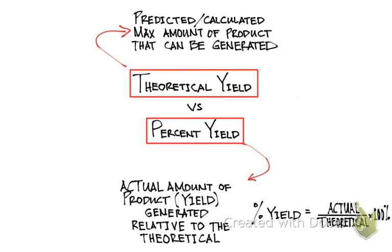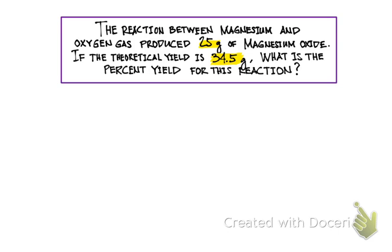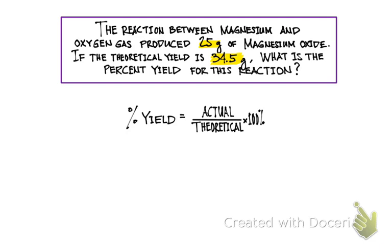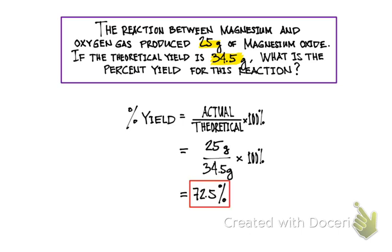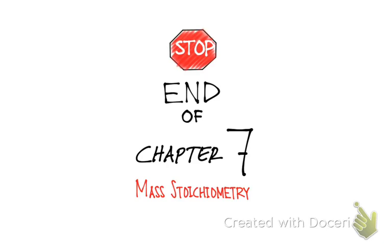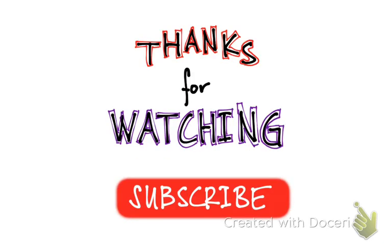There are many factors that can affect percent yield, but that's another topic for discussion. Here's an example: the reaction between magnesium and oxygen gas produced 25 grams of magnesium oxide. If the theoretical yield is 34.5 grams, what is the percent yield for this reaction? Using the formula for percent yield, the actual yield was 25 grams and the theoretical yield was 34.5 grams — plugging these numbers into the equation gives us 72.5 percent yield. And that completes chapter 7. As always, thank you for watching, and if you like this video please subscribe — I'll see you next time.